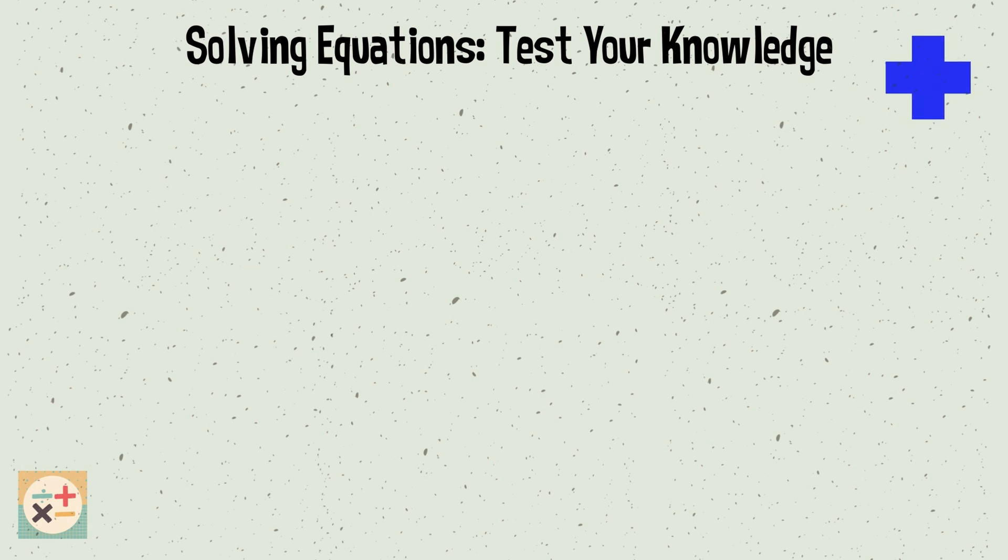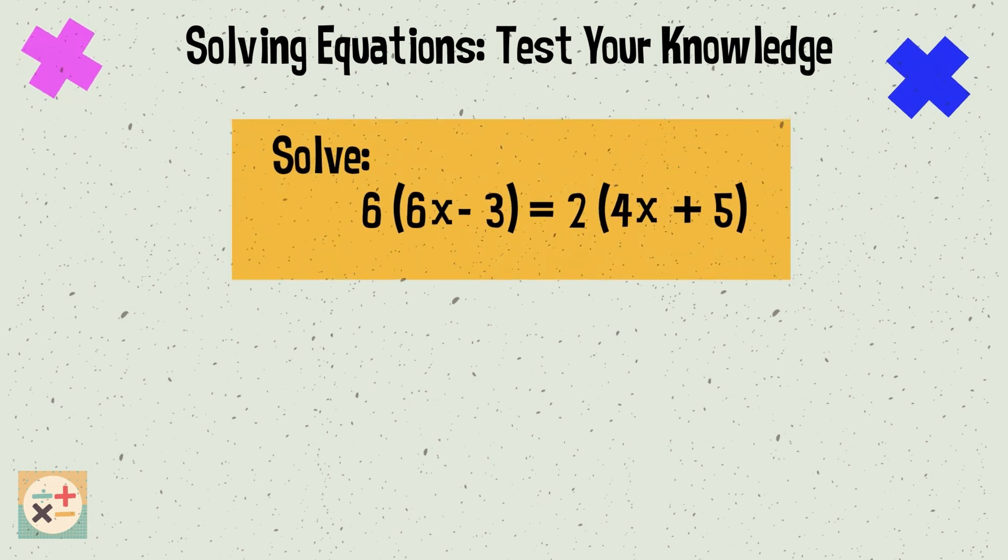Question 6. Solve the following: 6 multiplied by 6x minus 3 equals 2 multiplied by 4x plus 5. x equals 1.